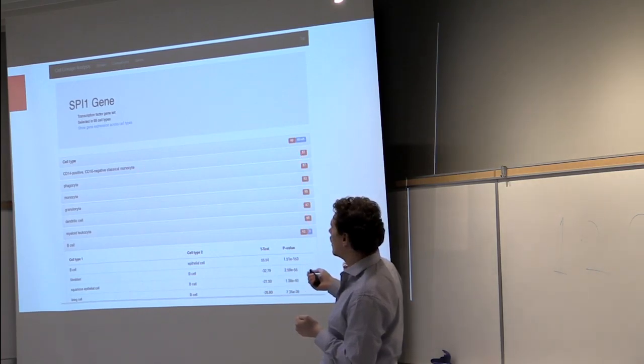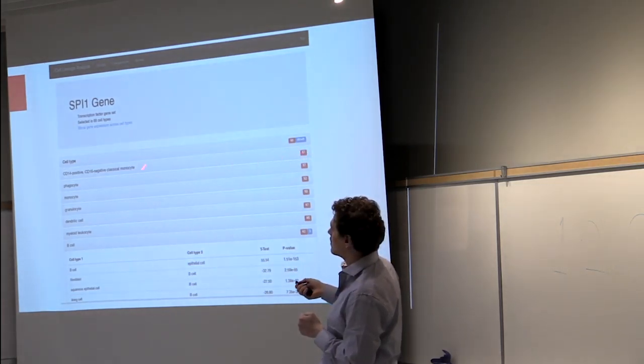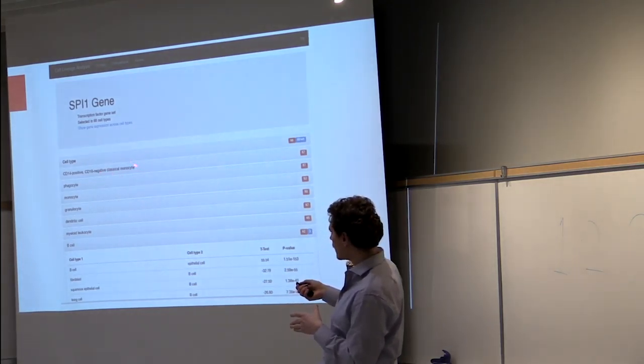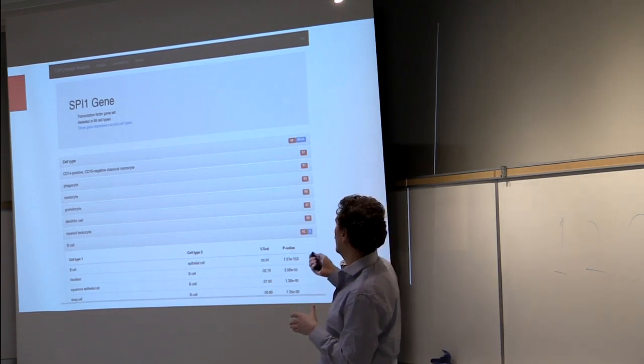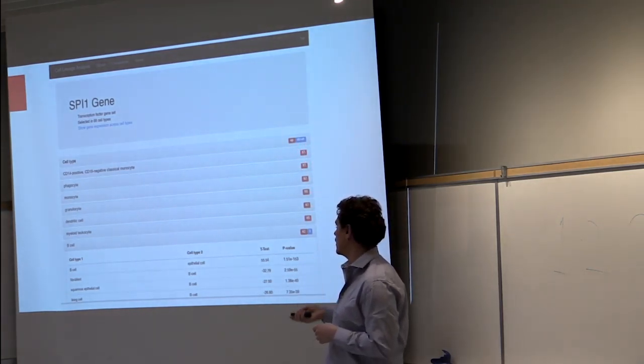And they are ranked by lineage score here. So what you can read is that SPI1 was selected 57 times in comparisons that involve CD14-positive CD16-negative classical monocytes, and this is always upregulated because it is shown here in red.